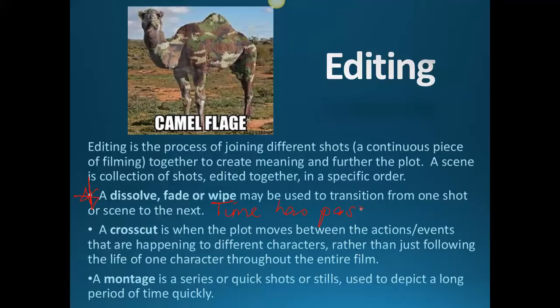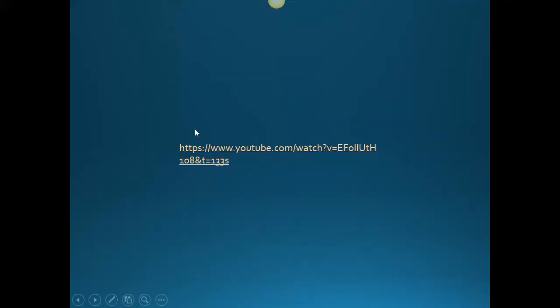We see dissolves right at the start when Jeff is trying to watch Thorwald and keeps falling asleep. The other technique we get a lot is cross-cutting — when we watch the scene with Mrs. Pet Owner, we get lots of cross-cuts between the different balconies and how people were feeling. Let's have a look at some editing and mise en scène in this clip.